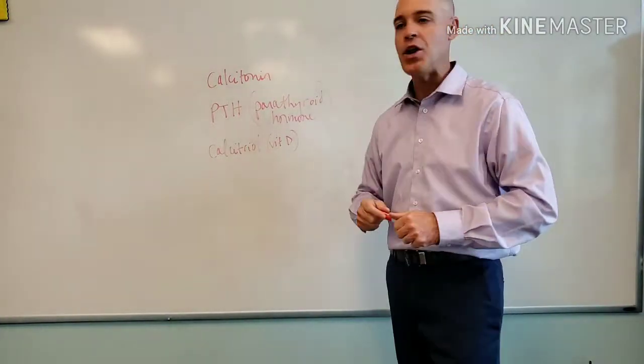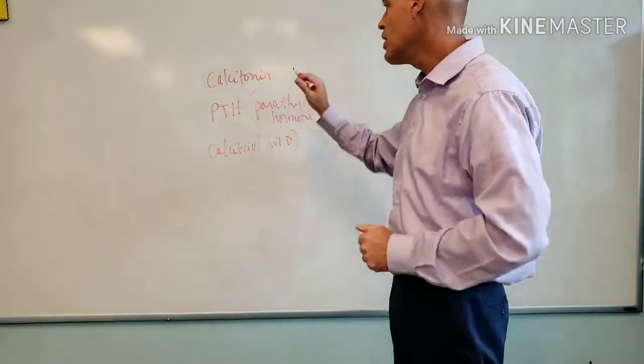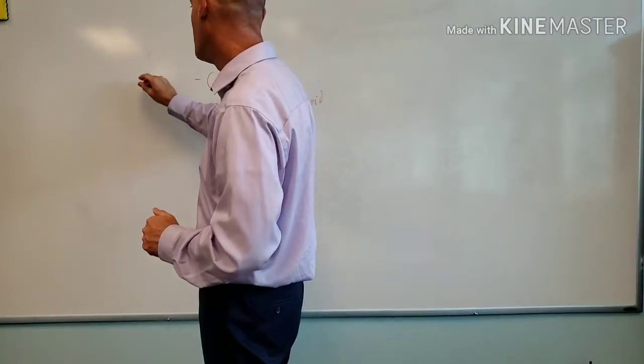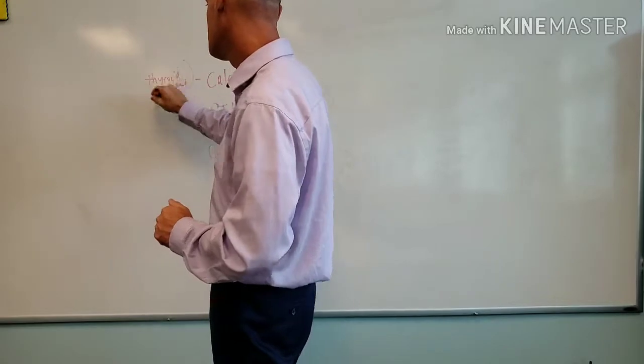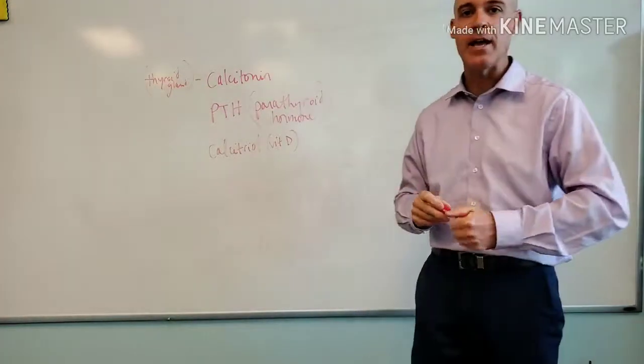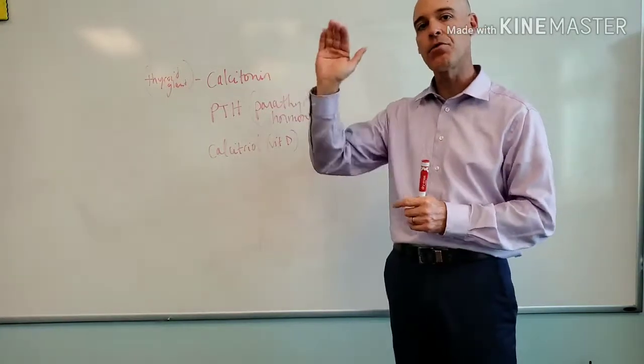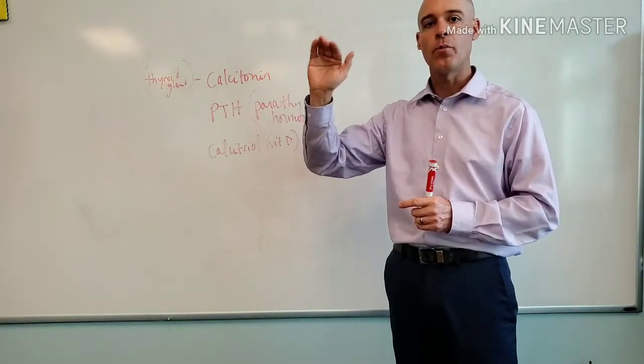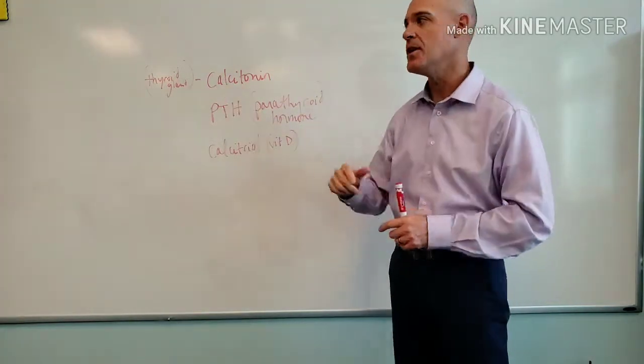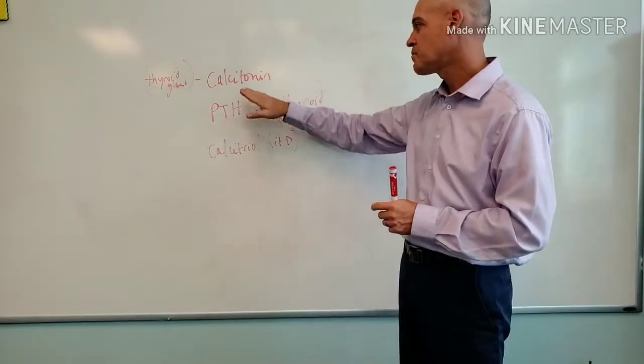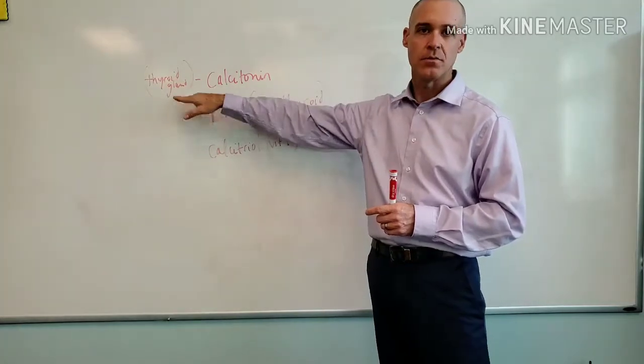So the first thing that we want to know is, where do we get these three hormones? Calcitonin comes from the thyroid. It is produced in the thyroid gland. We have another video if you want more information on hormones, watch our endocrine video where we go through all the basic glands and hormones that they produce. Calcitonin is made in the thyroid from C-cells, or parafollicular cells.